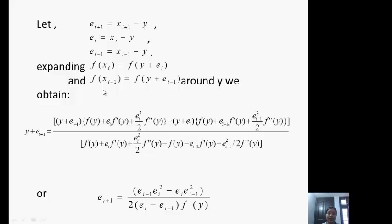Expanding f(x_i) and f(x_{i-1}) by Taylor series we obtain: f(x_i) = f(y) + e_i f'(y) + (e_i^2 / 2) f''(y). This is the expanded form of f(x_i) by Taylor series.